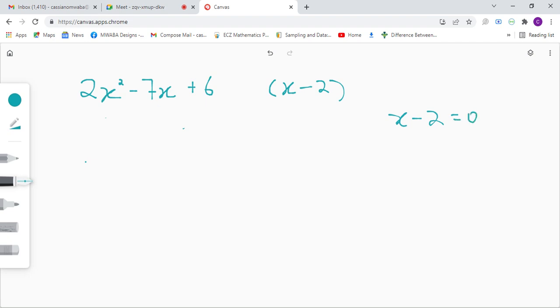x minus 2 equals 0, so x is going to be equal to 2.